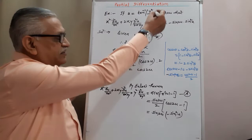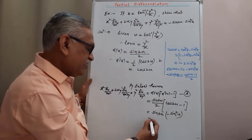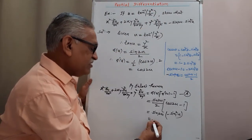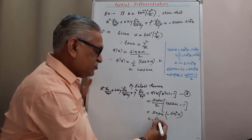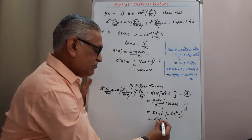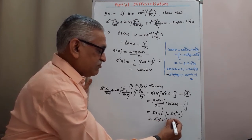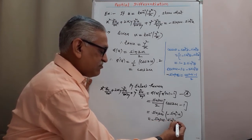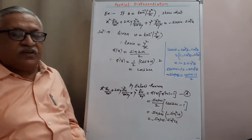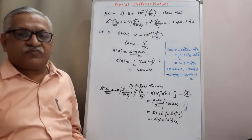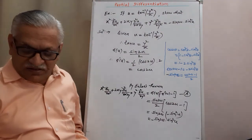That is the required result. Therefore, we get the value as −sin(2u) · sin²(u). Hence proved — we get the required result.